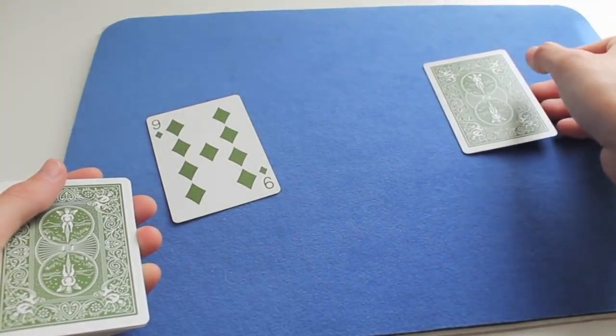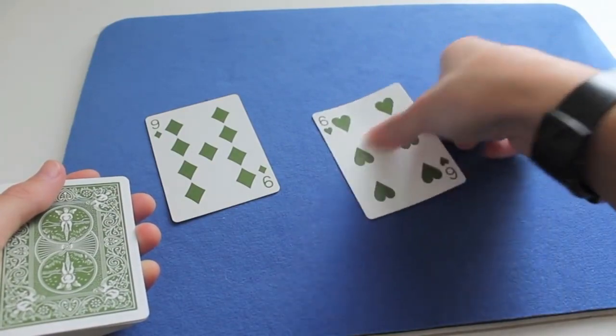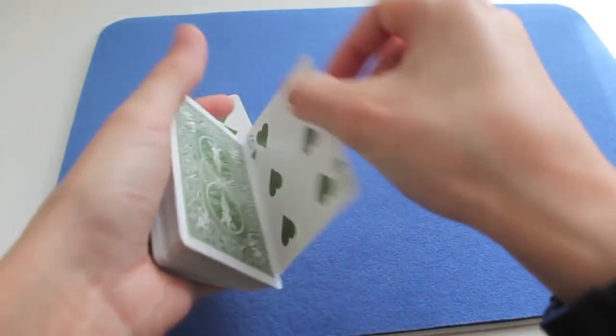And so, they take off their hand, they flip the card over, and they see that the six of hearts appeared in their hand.